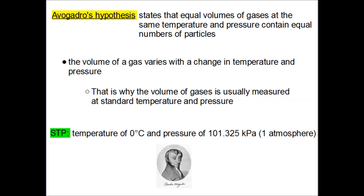The volume of a gas can vary with changes in temperature and pressure. This is why the volume of a gas is usually measured at what is called standard temperature and pressure — we'll refer to that as STP. The standard temperature is zero degrees Celsius, which is 273 Kelvin, and the standard pressure is 101.325 kilopascals, or kPa — that's also one atmosphere.